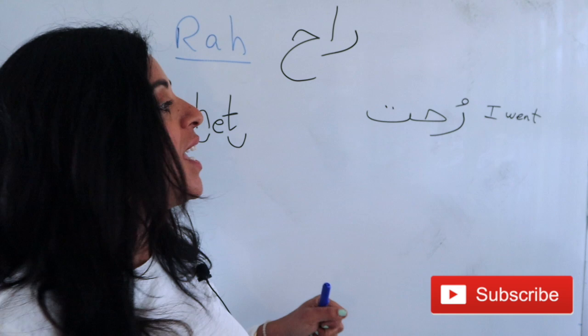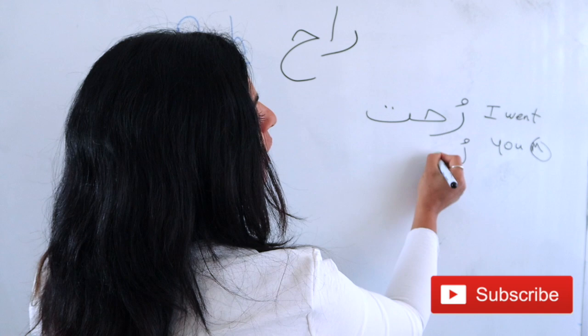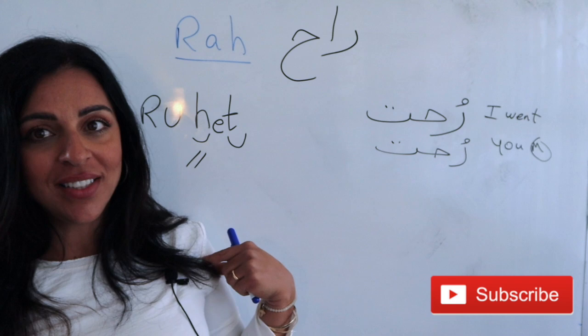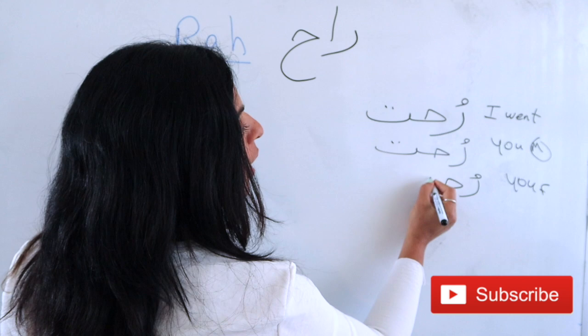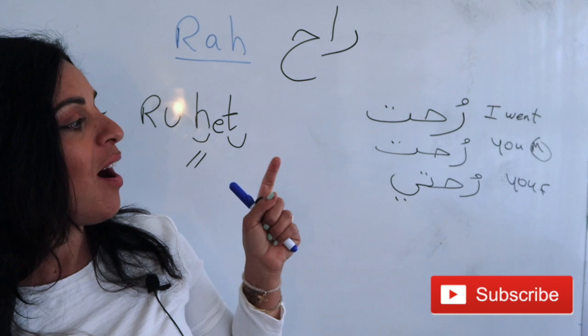You male — Enti rohit. You female — Enti rohti. Remember, with 'you female' there is always a glottal stop, not only with the verb raah. There's always a stop with 'you female' — we divide the syllables of the verb to simplify pronunciation. Enti rohit for male, Enti rohti for female.